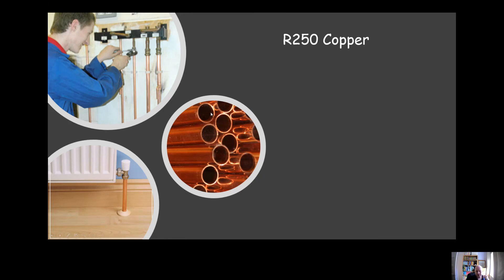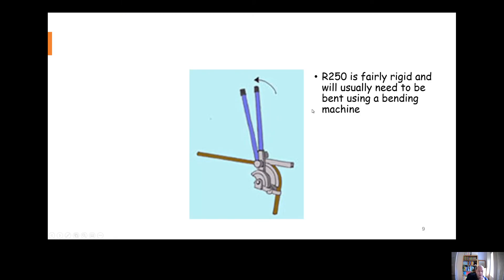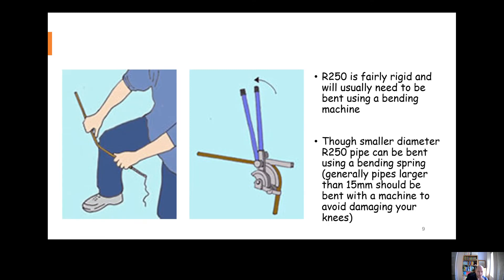R250 is the most commonly used type. The sizes can vary from 12mm up to 54mm, though the sizes that we are most likely to use are 15mm, 22mm, and 28mm, so it's worth making sure we remember these. R250 can be plated with chromium, which gives it a nice shiny finished look. R250 is considered to be half hard, so it's quite rigid. You should only really bend it using a bending machine, or very occasionally if it's a smaller bore R250 pipe, you could bend it using a bending spring.